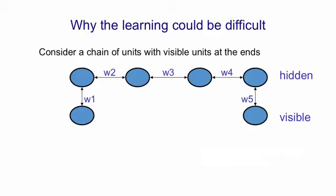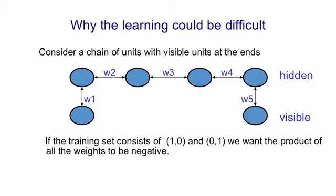Now there are many reasons why the learning could be difficult. This is probably the most important reason. If you consider a chain of units, a chain of hidden units here, with visible units attached to the two ends, and if we use a training set that consists of (1,0) and (0,1), in other words we want the two visible units to be in opposite states, then the way to achieve that is by making sure that the product of all those weights is negative.